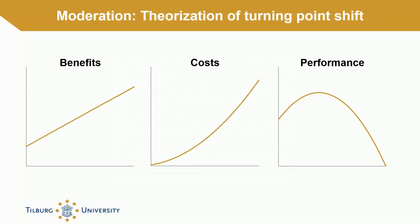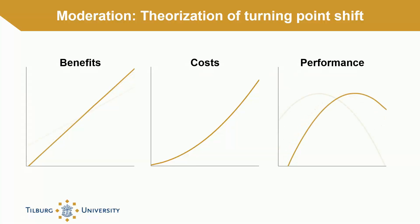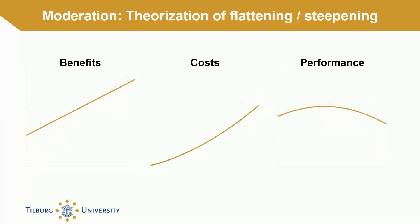One novel aspect of our paper is the fact that we decompose moderation of U-shapes into two distinct moderation types: turning point shift and flattening or steepening. Building on our proposed method of theorizing based on latent mechanisms, one intuitive way to theorize a turning point shift is to argue that the moderator strengthens the latent benefits line. As can be observed here, as the latent benefits line strengthens, the turning point of the inverted U-shape shifts rightwards.